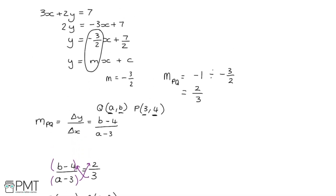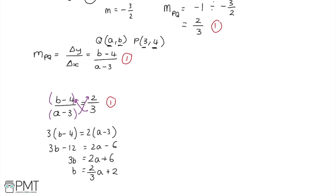Looking at how the marks are awarded: the first mark is for rearranging the equation to get y in terms of x. The second mark is for using its gradient and finding the negative reciprocal — the two gradients must multiply to minus 1. The third mark is for finding the gradient of PQ using A and B, giving B minus 4 over A minus 3. The fourth mark is for setting up an equation where the two gradients are equal, and the fifth and final mark is for the correct answer B equals two thirds A plus 2.